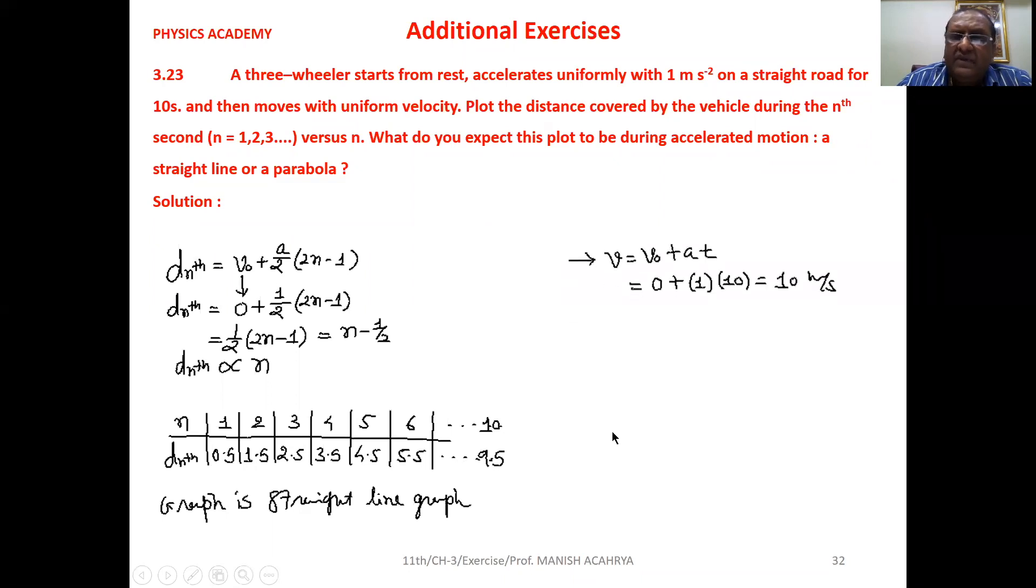If we draw the graph, it will be a straight line because you can observe the linear proportionality. It moves on the straight road for 10 seconds and then moves with uniform velocity.